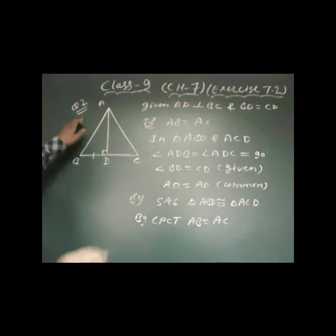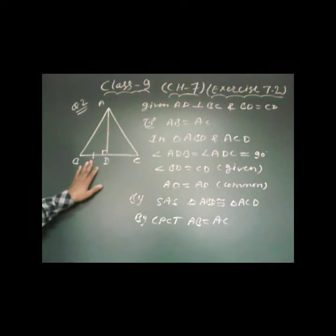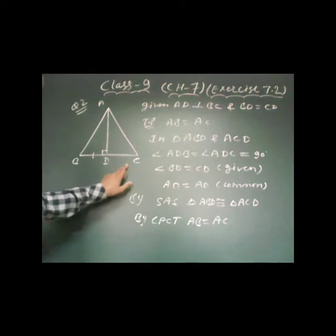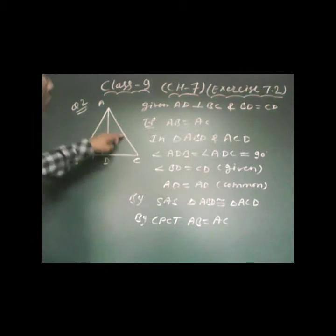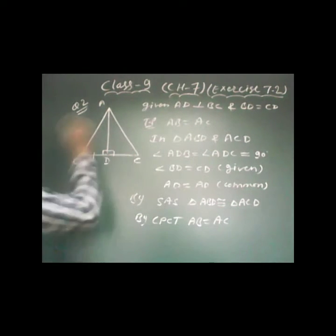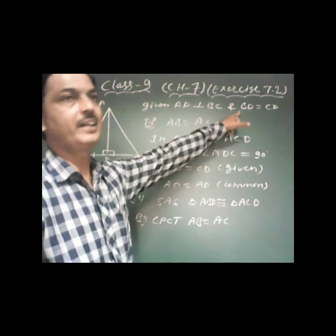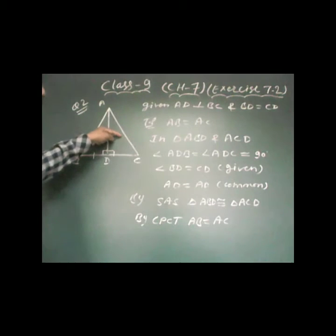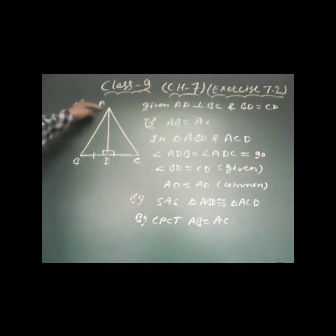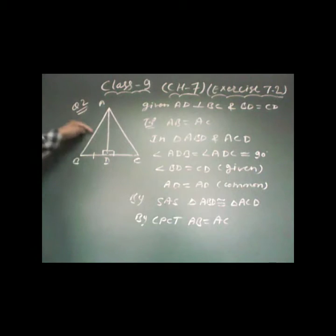In question number 2, angle APC is given and AD is a perpendicular bisector of BC. We need to prove triangle APC is isosceles, meaning we need to prove AP is equal to AC. Since AD is perpendicular to BC, angle ADB equals angle ADC equals 90 degrees, and since D is the midpoint, BD is equal to CD. By SAS congruence, triangle ABD is congruent to triangle ACD, and by CPCT, AP is equal to AC.